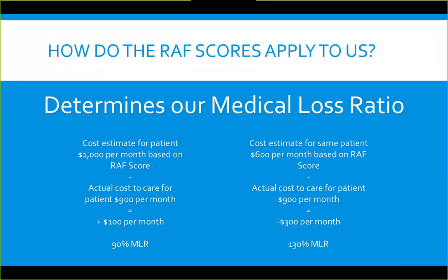The RAF score determines our medical loss ratio. In value-based programs, cost over quality equals value. For example, if a patient's cost estimate is $1,000 per month based on the RAF score, and actual cost is $900, we have a $100 surplus — a 90% medical loss ratio, meaning we came in under the estimated budget.